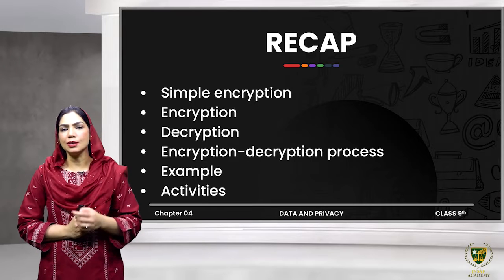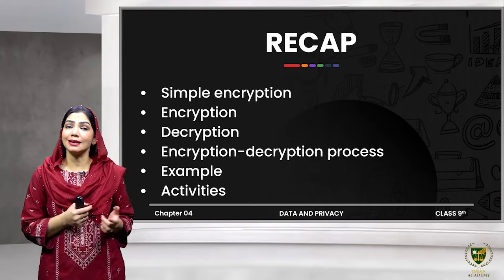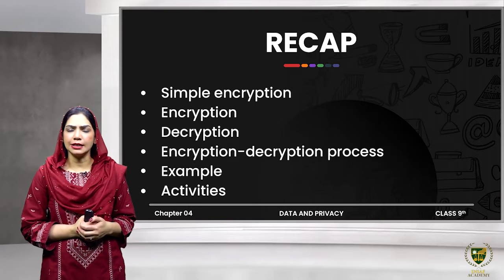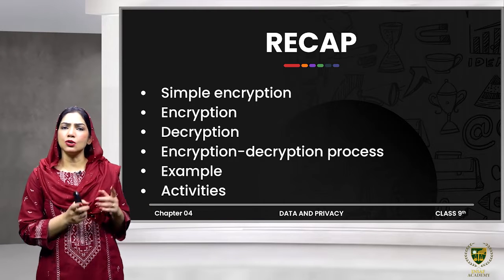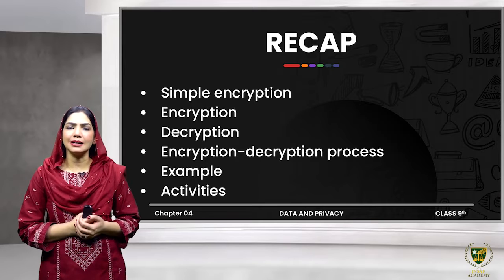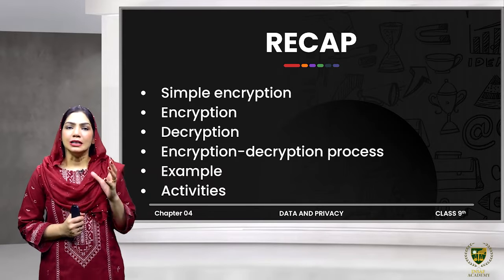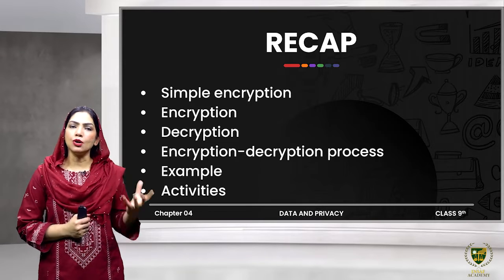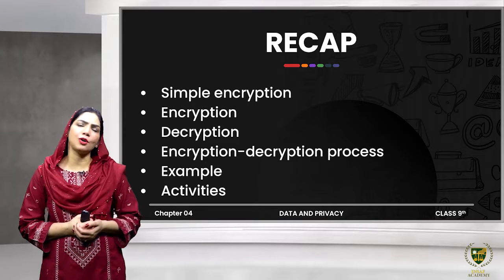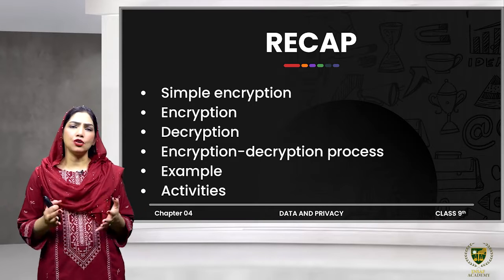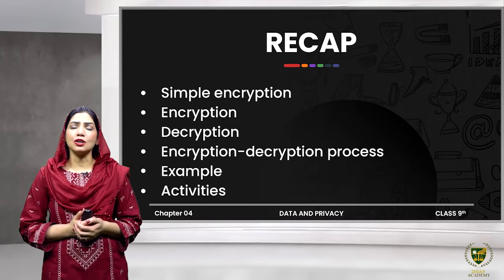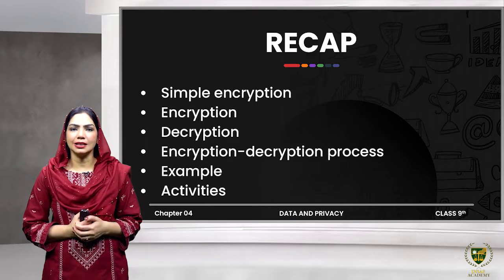The ciphertext reaches our authorized person, and the authorized person there applies the same key that we had shared with them — the key we used to encode the data — and to decrypt it, they decode it using that same key on the ciphertext. Our text is decoded and comes back as plain text.